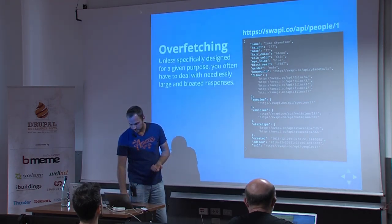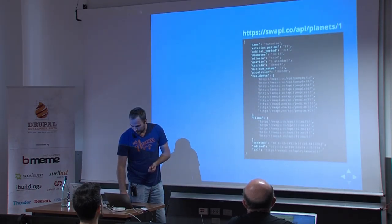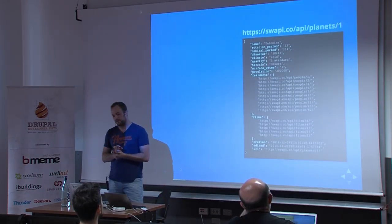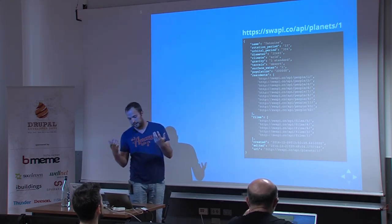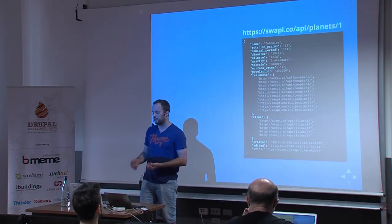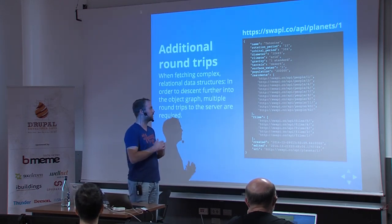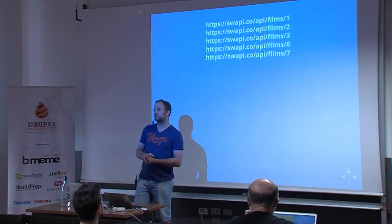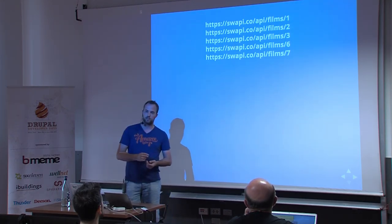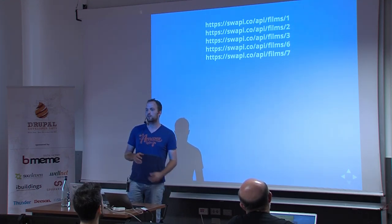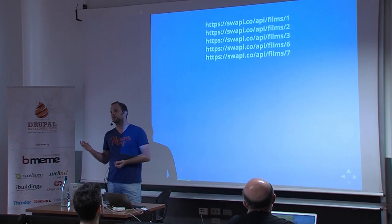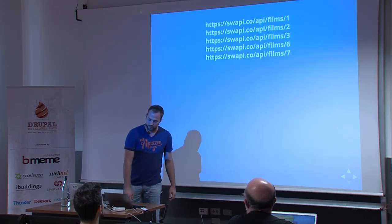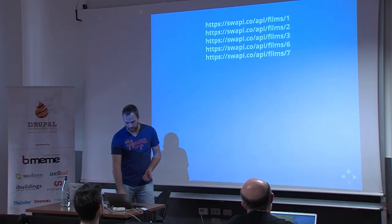So this is overfetching. If you want to fetch the name of the planet, you have to get the full object and make another round trip to the server — additional round trips, getting all that stuff again, more overfetching. Because we have a list of associated movies, we have to do many, many round trips back to the server to fetch all the films. We could implement a custom resource to fetch multiple films at once, but another round trip is always required.